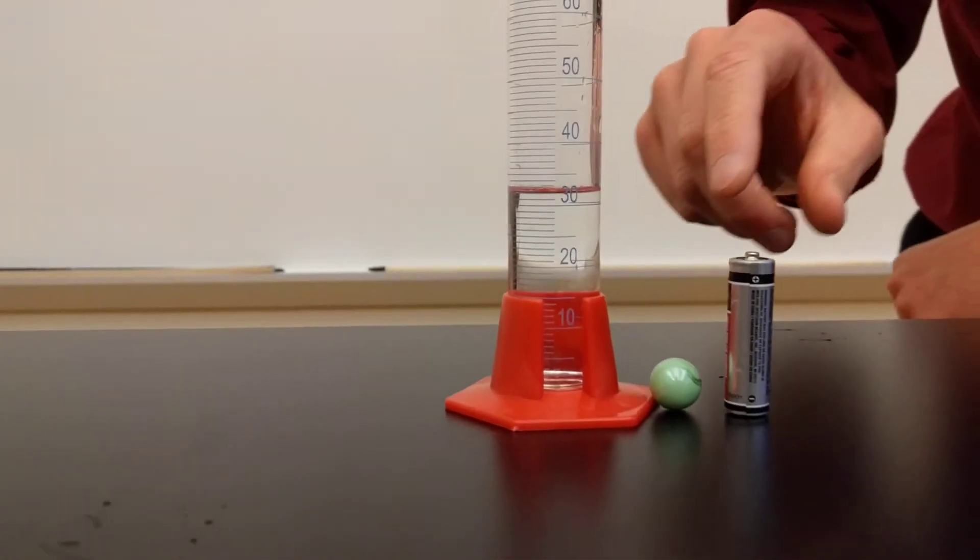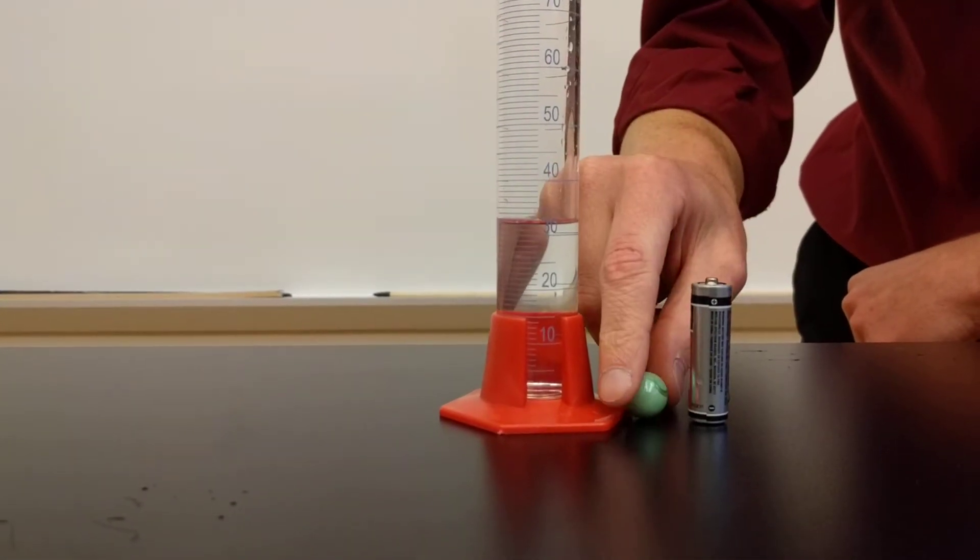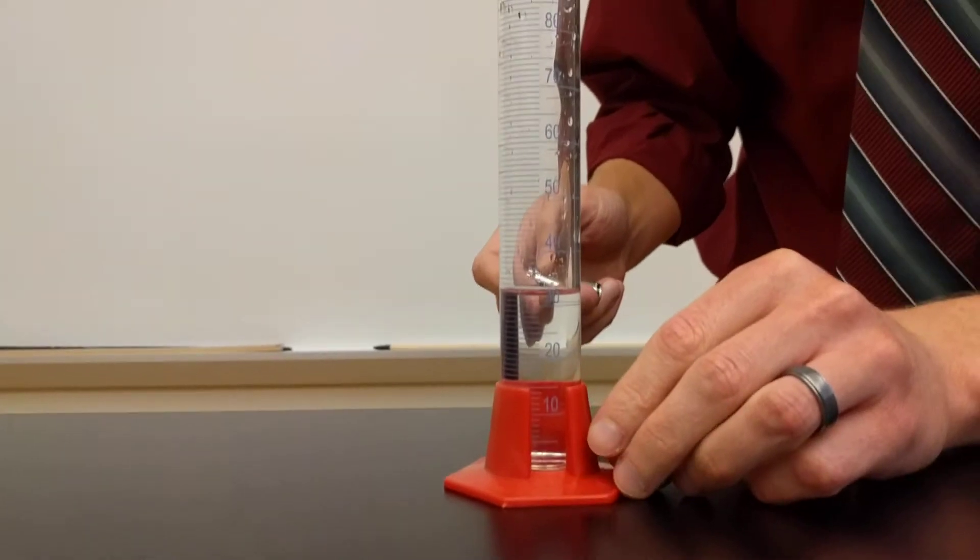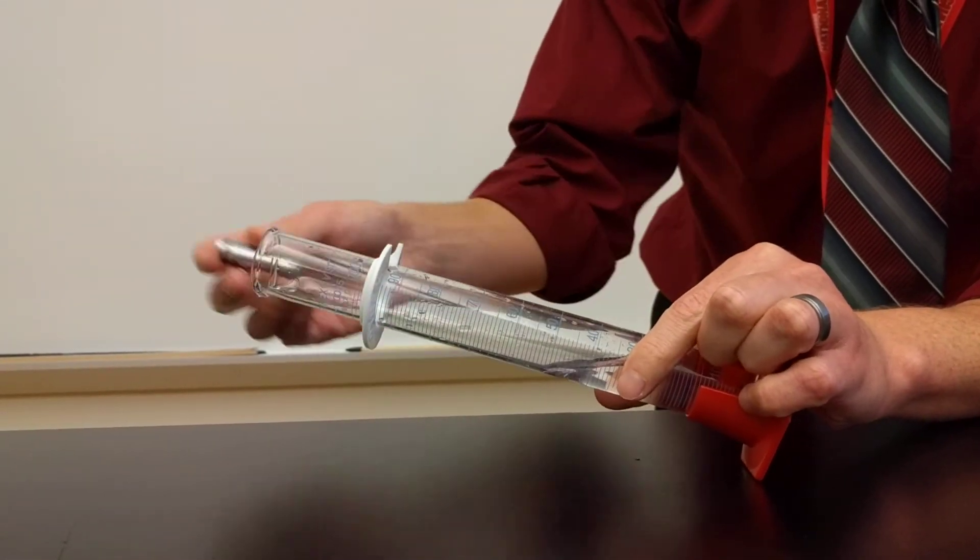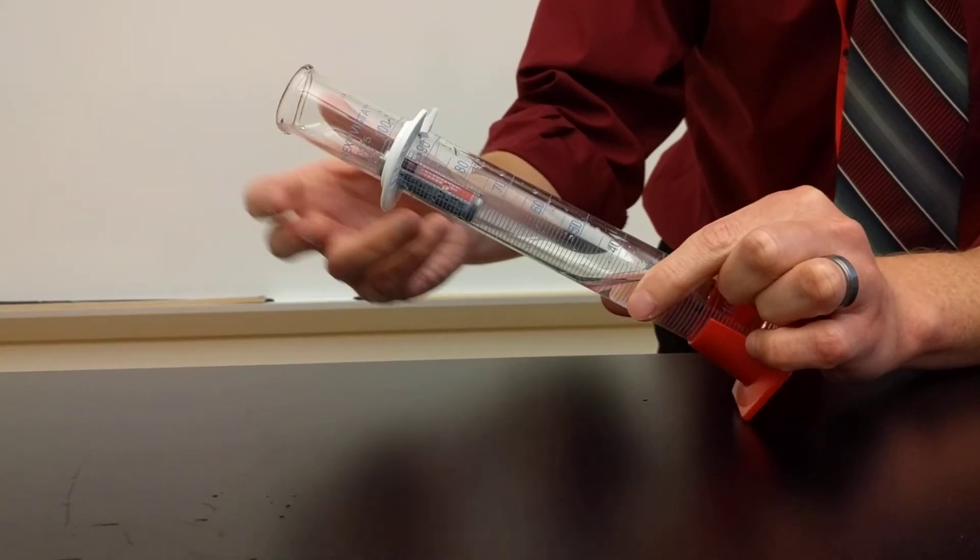Now what we're going to do is we're going to take both objects and place them into our graduated cylinder. And to do that, we're actually going to tilt the graduated cylinder. That way water doesn't splash out, and we don't break our graduated cylinder.